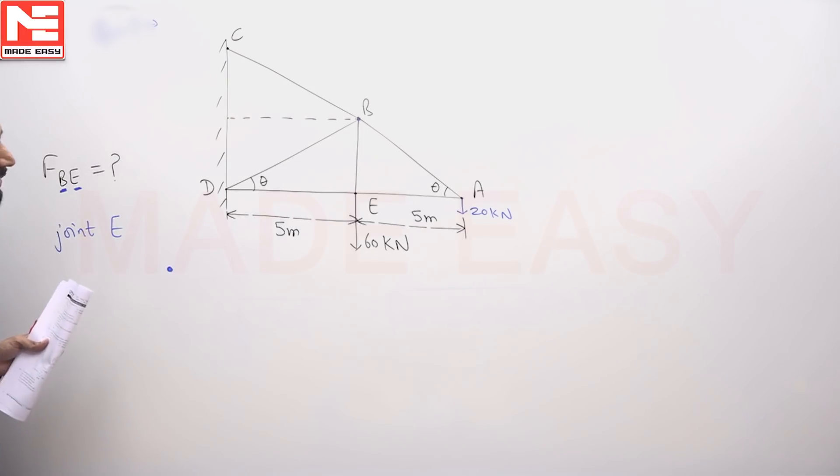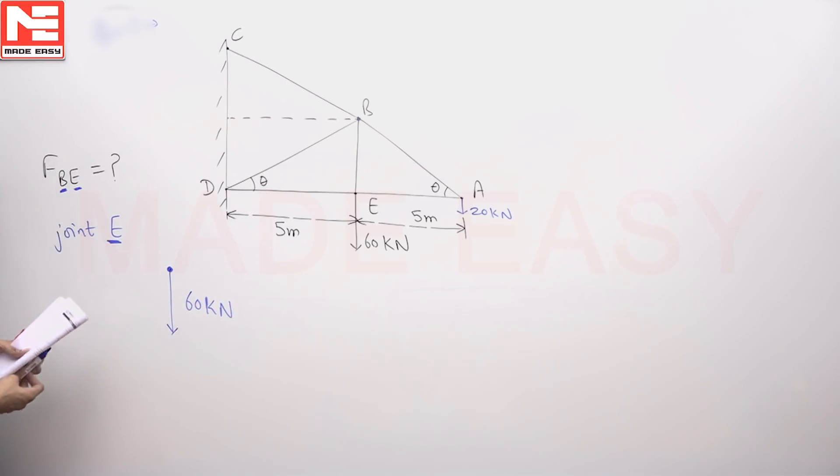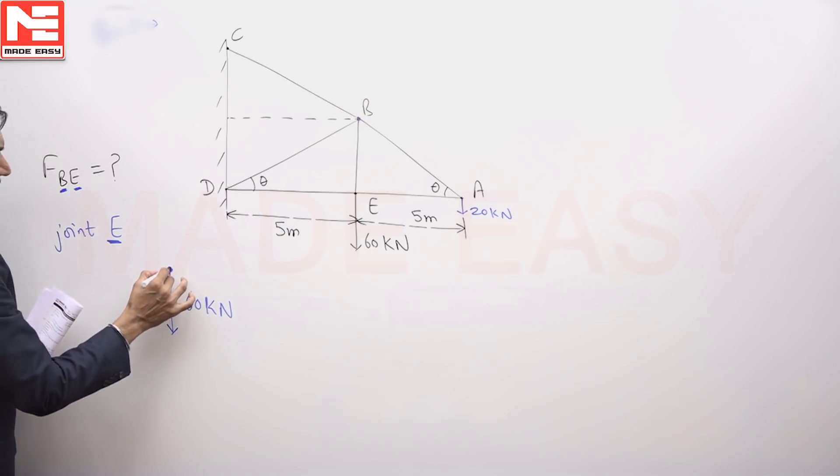You must be thinking that there are 3 members but the force unknown is just 2 values. First I am going to draw joint E. It is 60 kilo Newton acting at joint E.